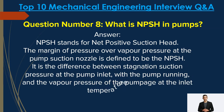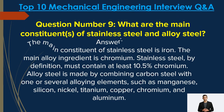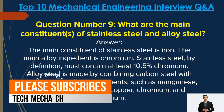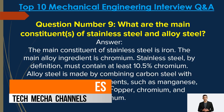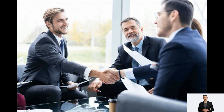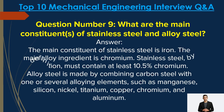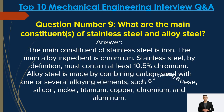Question number nine: What are the main constituents of stainless steel and alloy steel? Answer: The main constituent of stainless steel is iron, and the main alloying ingredient is chromium. By definition, stainless steel must contain at least 10.5 percent chromium. Alloy steel is made by combining carbon steel with one or several alloying elements such as manganese, silicon, nickel, titanium, copper, chromium, and aluminum.